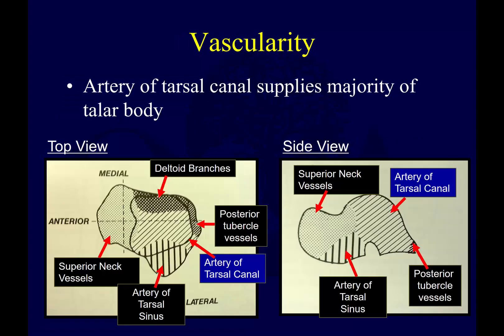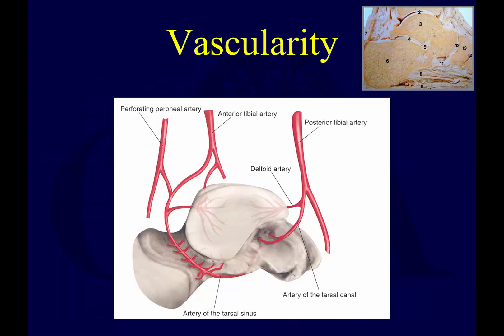The distribution of the blood supply shows that a good portion is supplied by the artery of the tarsal canal, while the artery of the tarsal sinus helps supply the inferior lateral portion. The two you'll hear about most are those two arteries, but the deltoid branches and neck vessels also contribute. Blood supply comes from the anterior tibial and posterior tibial arteries, with branches forming the artery of the tarsal canal and sinus, as well as the deltoid artery.